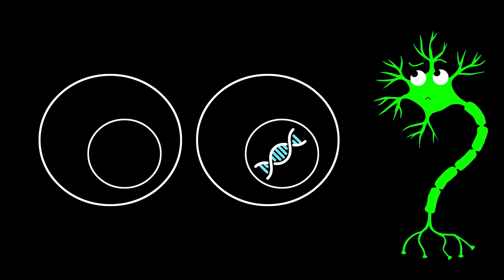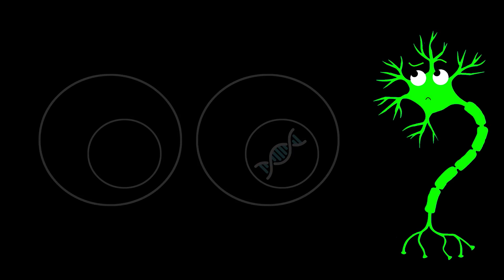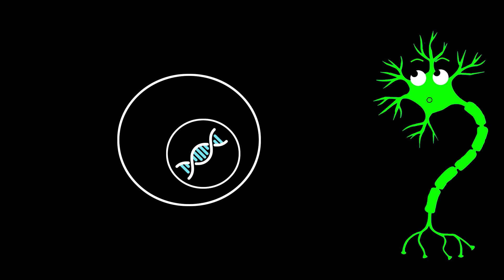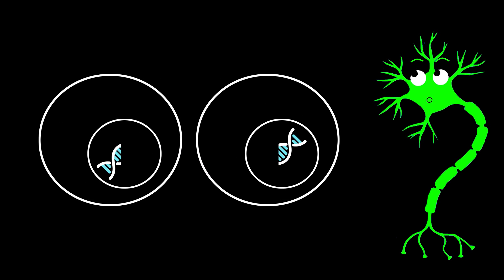Remember, the original parent cell has only one copy of the DNA. So does one daughter cell get all the DNA while the other gets none? Does each daughter cell get half the DNA, like we're cutting the recipe book in half and splitting it evenly amongst the cells?